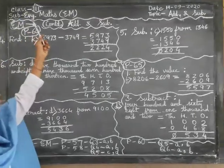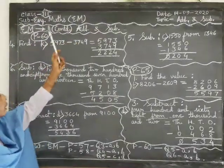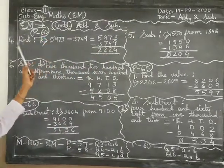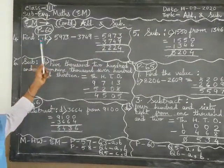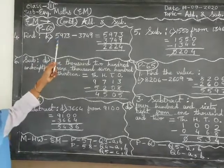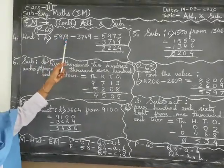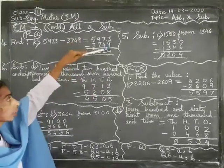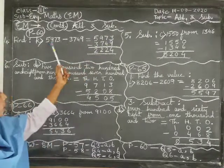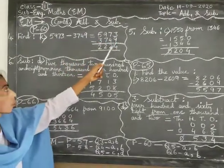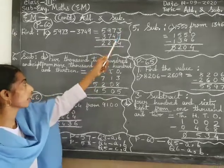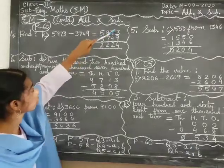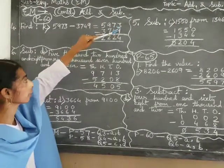Plus 3, English mess, EM, later continuity, addition and subtraction. Let's find the value for 5,973 minus 3,749. So here we have 3, 9, 4 minus 7, 4 minus 7, minus 7, 13. 13, 94.